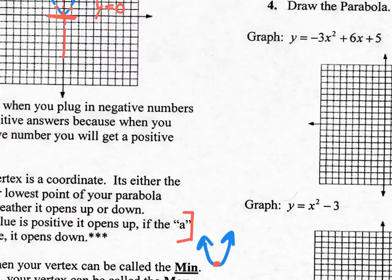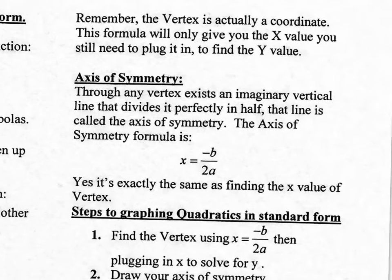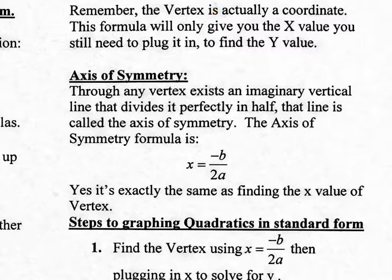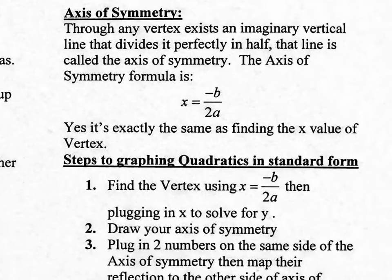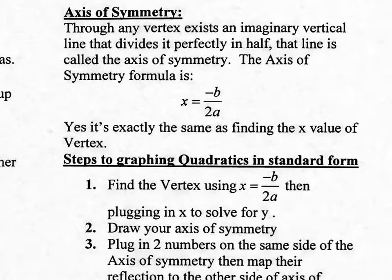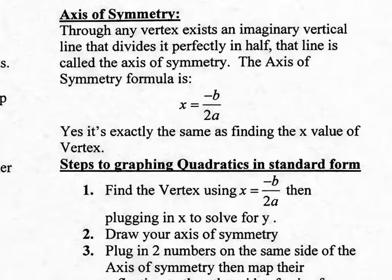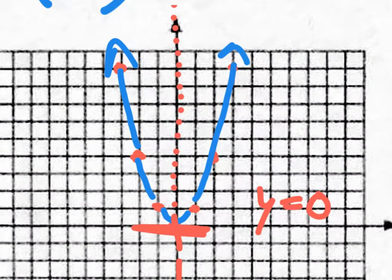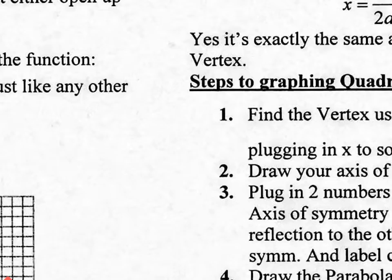The axis of symmetry is like that mirror — a reflection line. Through any vertex exists an imaginary vertical line that divides the parabola perfectly in half. That line is called the axis of symmetry. We already drew it over here as a red dotted line, and notice it goes right through the vertex.